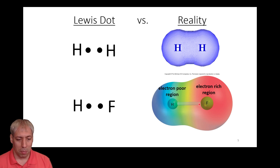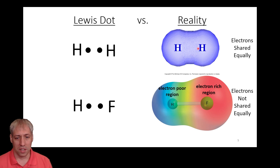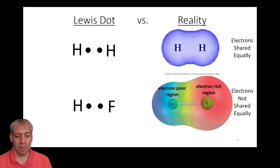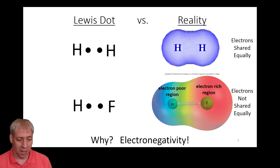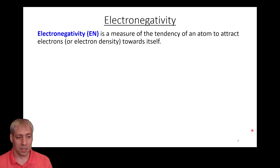This bond isn't shared evenly between these species. If you have two atoms that are the same, those electrons are shared evenly. If those two atoms are not the same, they are not going to be shared equally. The thing that dictates whether they're sharing equally or not is going to be the electronegativity of the atoms.